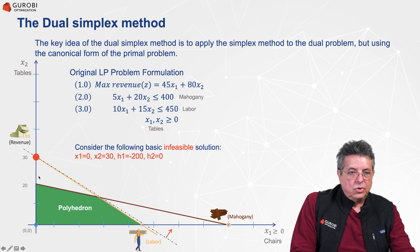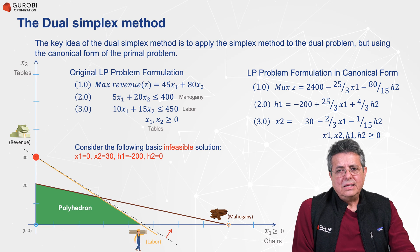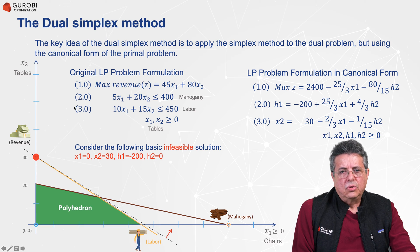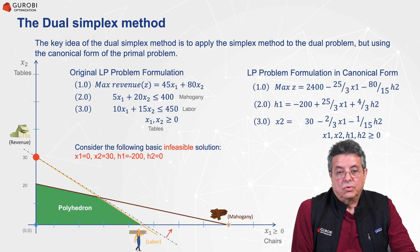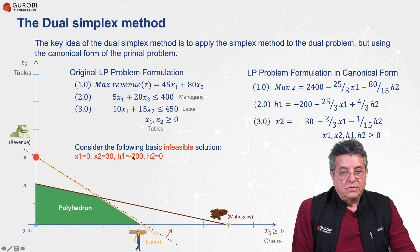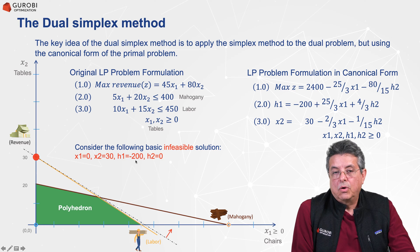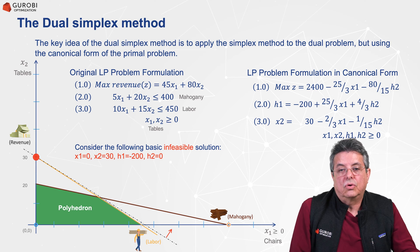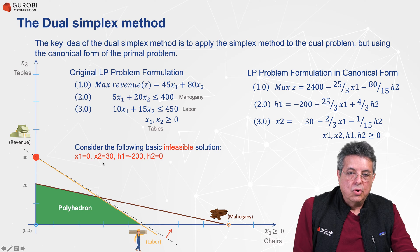This basic infeasible solution is represented by this red point. Let's transform this original problem into a canonical form with respect to the two basic variables in the infeasible solution. These variables are the non-zero variables: building 30 tables, and the other basic variable H1 equal to minus 200. We want to express this problem in canonical form with respect to basic variables X2 and H1.